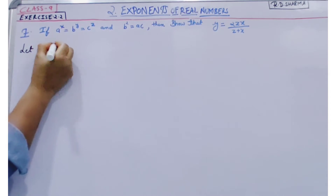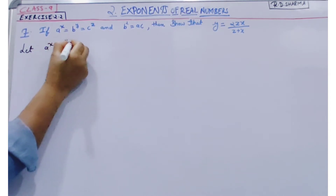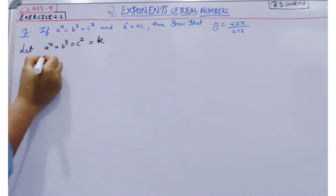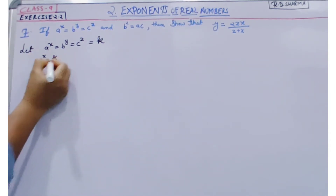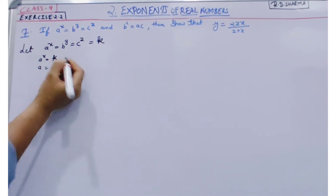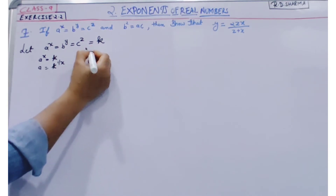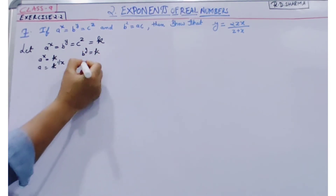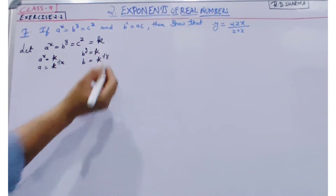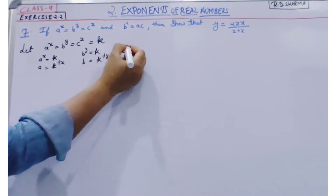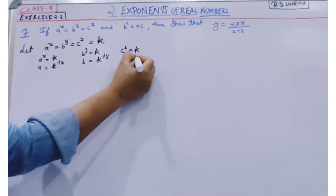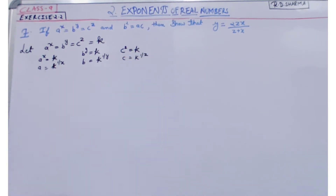Let a to the power x equal to b to the power y equal to c to the power z equal to k. So if a to the power x is equal to k, then a is equal to k to the power 1 by x. Similarly, if b to the power y is equal to k, then b is equal to k to the power 1 by y. And c to the power z is equal to k, so c is equal to k to the power 1 by z.